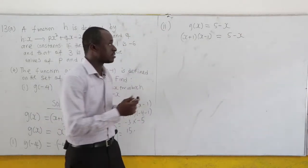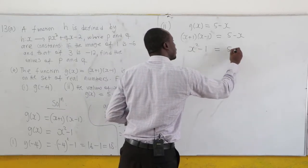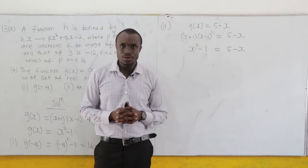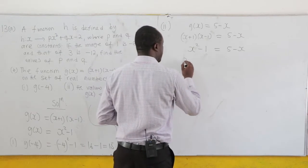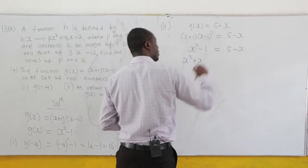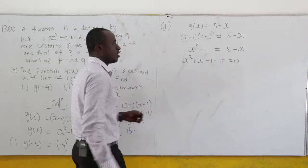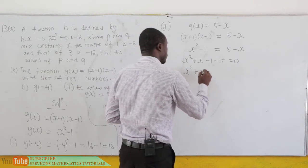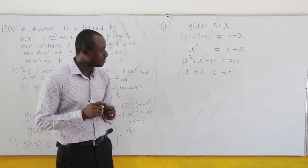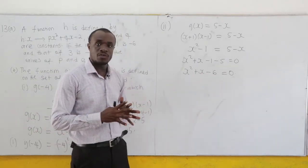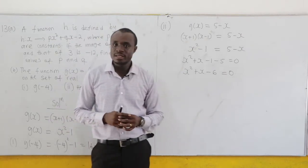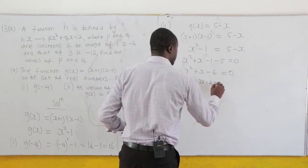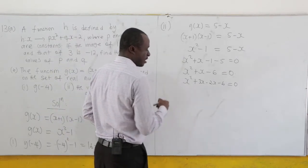That's the difference of two squares, so expanding gives x² - 1 = 5 - x. This is a quadratic equation. Let's put it in standard form ax² + bx + c = 0. Bringing everything over: x² + x - 1 - 5 = 0, so x² + x - 6 = 0. We need two numbers that multiply to -6 and add to 1: that's 3 and -2. So we have x² + 3x - 2x - 6 = 0.